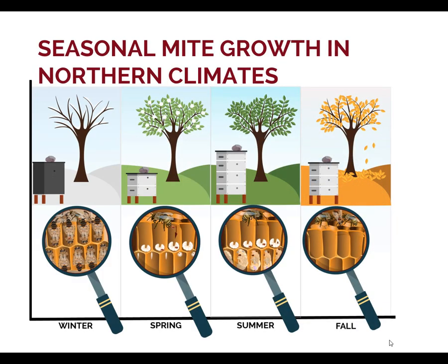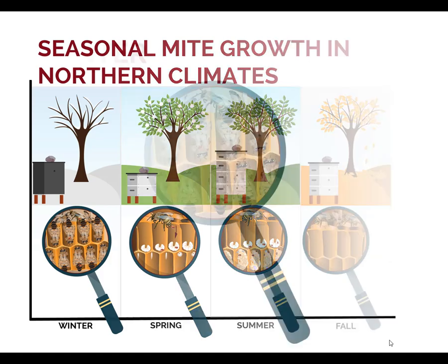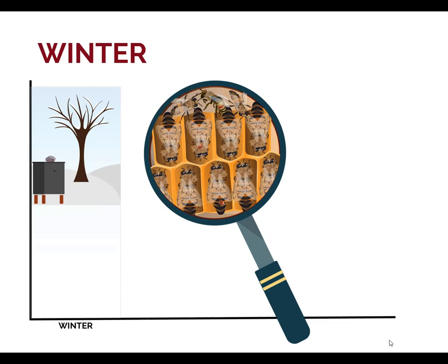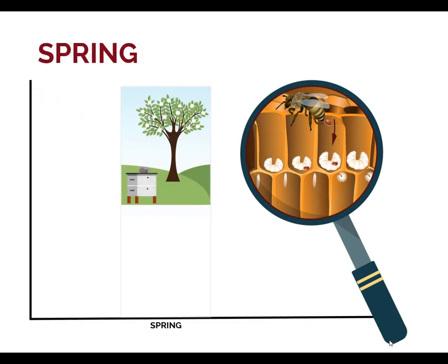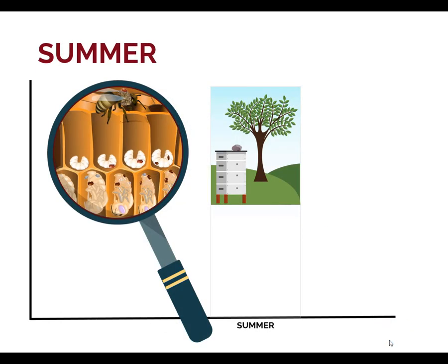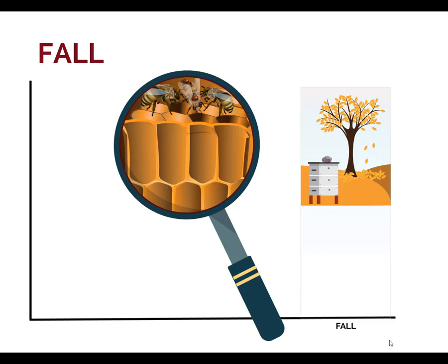In northern climates, Varroa mite reproduction depends on the season. A lack of honeybee brood in winter in northern climates makes it difficult for Varroa to reproduce. In the winter, the mites in the colony are on adult bees. When the queen begins to lay more in the spring, the Varroa in the colony have an opportunity to reproduce. In the late spring and summer, there is typically lots of brood in the colony, which means that Varroa are able to reproduce in the brood nest. In the fall, mites feed on and damage developing winter bees. When queens stop laying in the fall, Varroa are not able to reproduce. The Varroa in the colony will be on adult bees.